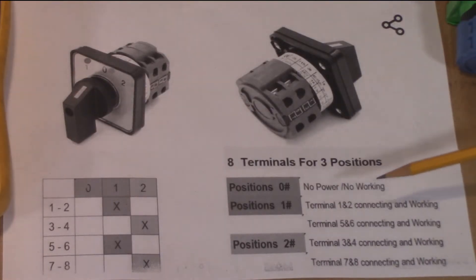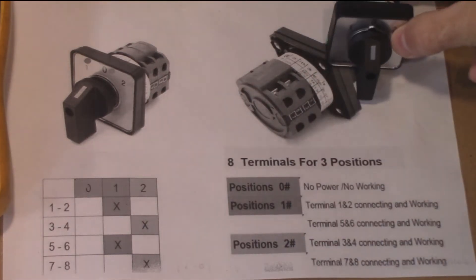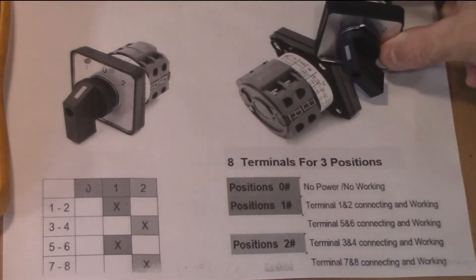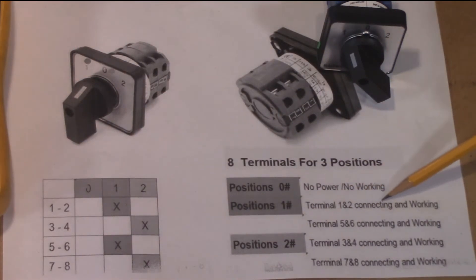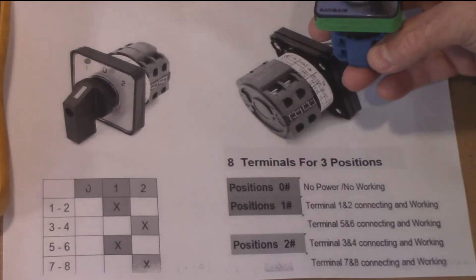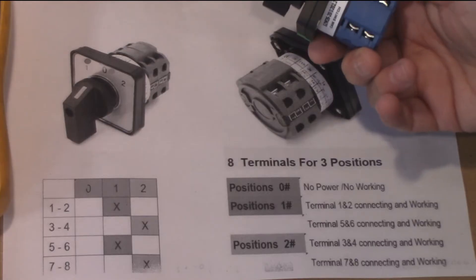Let's just take a look at this diagram here. Position zero, there's three positions. When you're in zero, no power, no working. Position one, go to position one, terminal one and two connecting and working. And terminals five and six connecting and working. Then position two is terminals three and four connecting and working, and terminals seven and eight connecting and working.